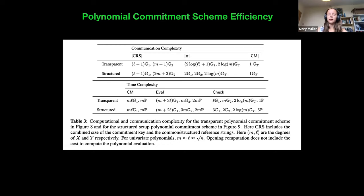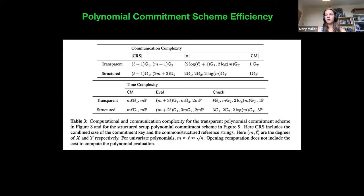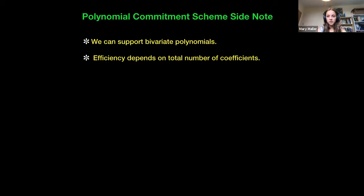This is the table in the paper where we talk about how we fare in terms of efficiency. We've included a transparent and a structured version of the efficiency table. We do provide a way to implement the scheme with a transparent setup, however our verifier time is quite a lot heavier with that — we get square root verifier time. Whereas with a structured setup, we can get that down to logarithmic. We can also support bivariate polynomials, where the efficiency depends on the total number of non-zero coefficients — something I don't believe people have managed to do before.